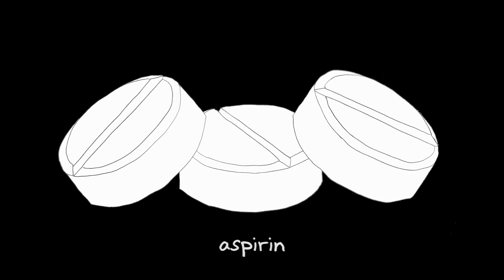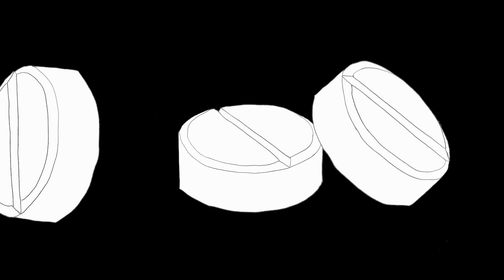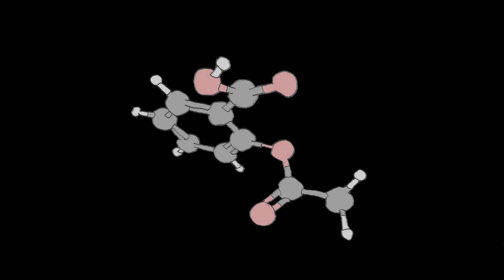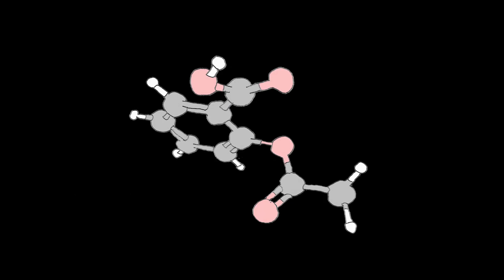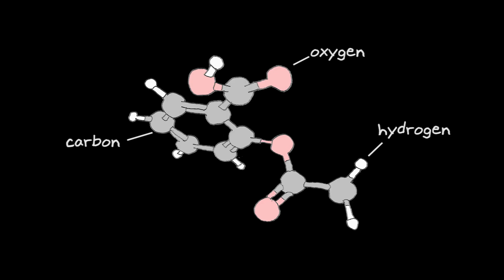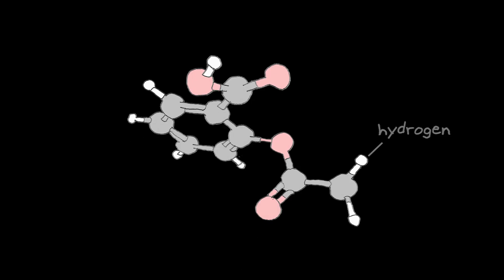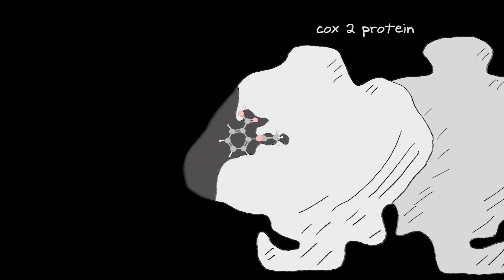We begin with aspirin. Aspirin is a drug we've known about for hundreds of years. It's a chemical compound, a molecule made of carbon, oxygen and hydrogen atoms. It works, in part, by binding to and disabling target proteins in our bodies. That's basically how small molecule drugs work, by binding the proteins which play a role in disease.